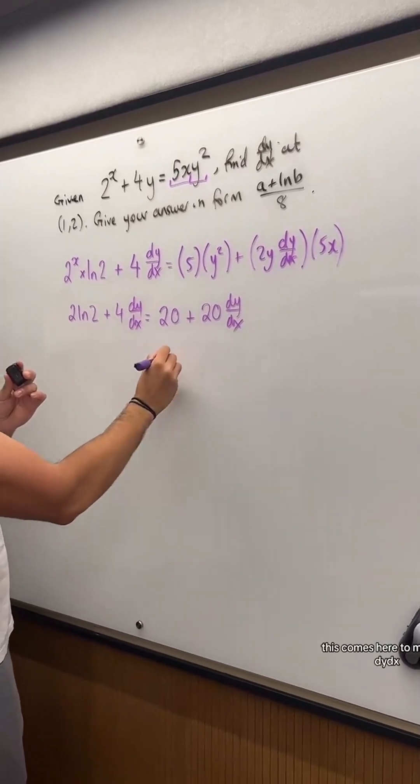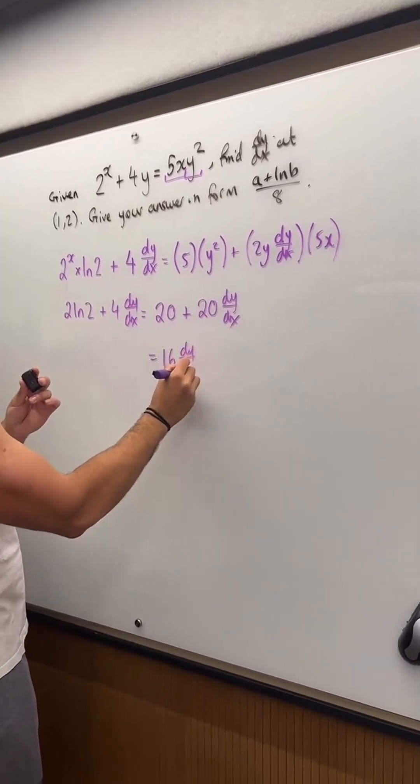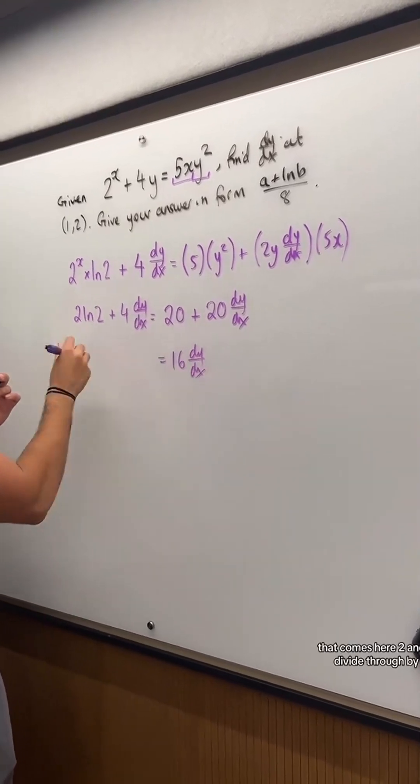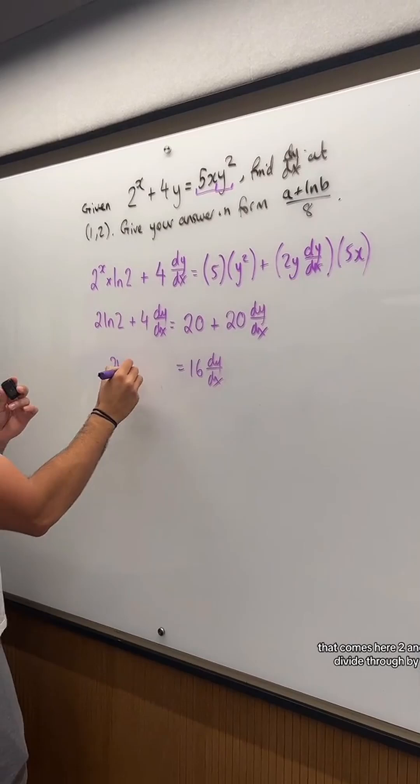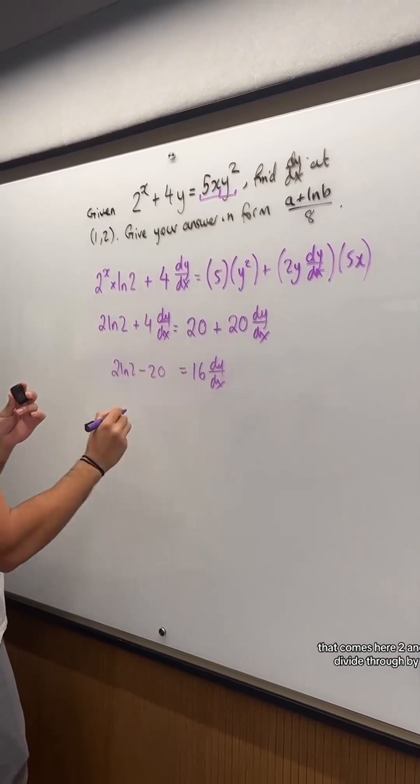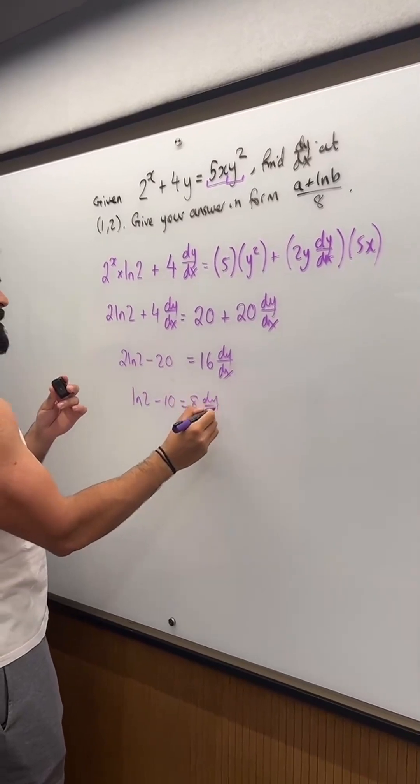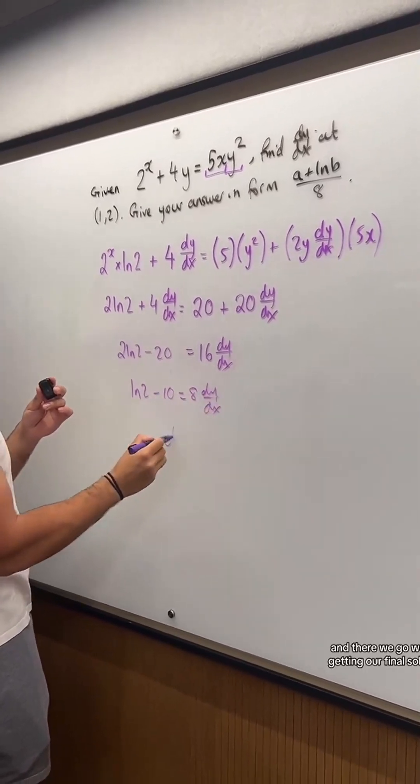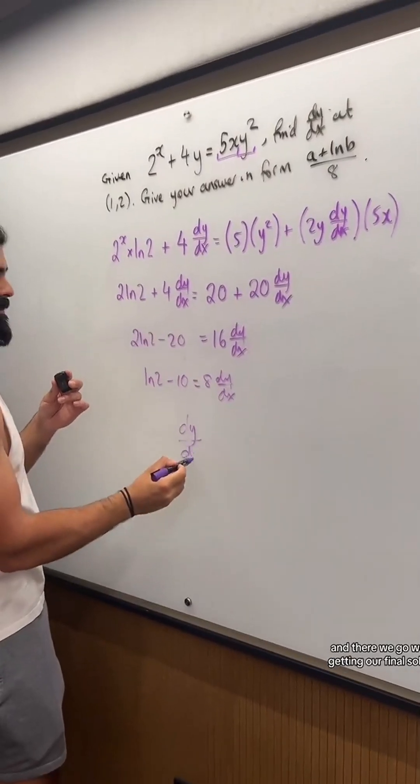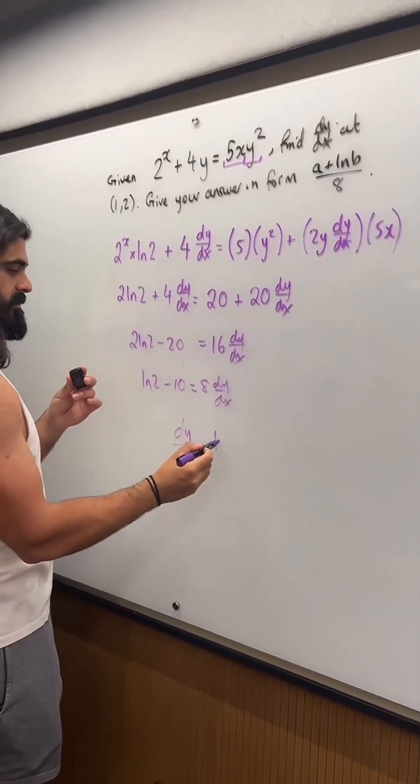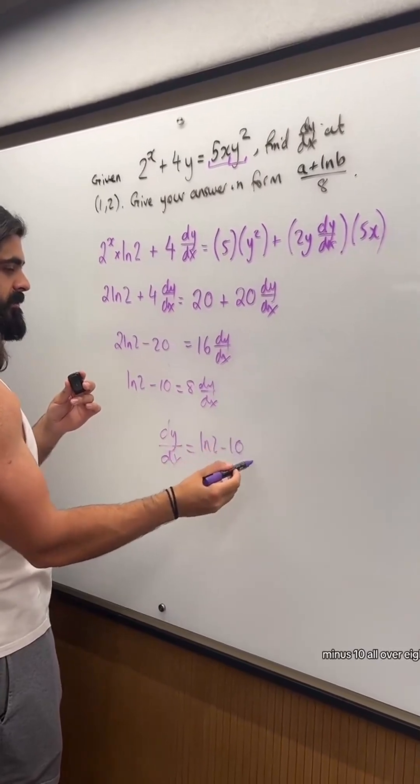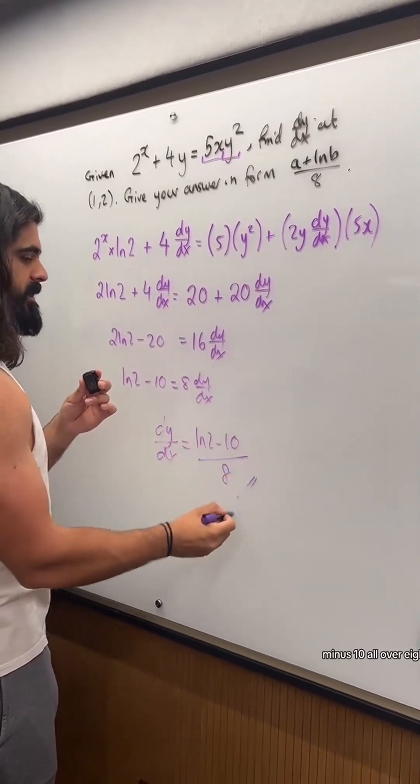This comes here to make 16 dy/dx. That comes here. 2 ln(2) minus 20. Divide through by 2. And there we go. We are getting our final solution: ln(2) minus 10 all over 8.